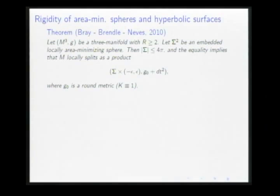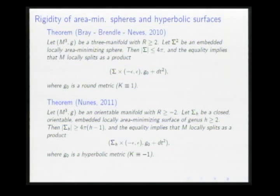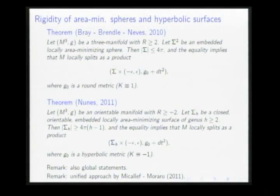The remaining case was studied by Ivaldo Nunes. His theorem is the following: if M has scalar curvature at least minus 2, and it contains a closed, orientable, embedded, locally area-minimizing surface of higher genus, then the area of this surface must be at most a certain expression, and as before, we have a local splitting where the slice now has a hyperbolic metric. Their work also contains global statements about the global splitting of some coverings of M.